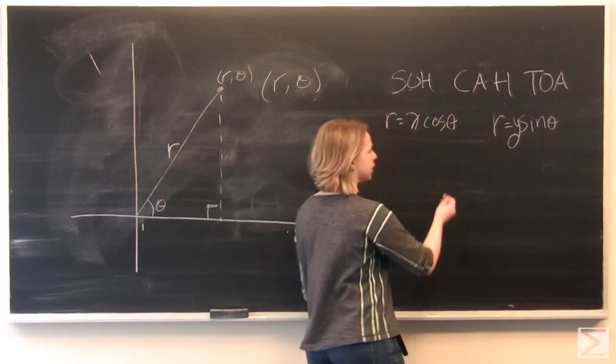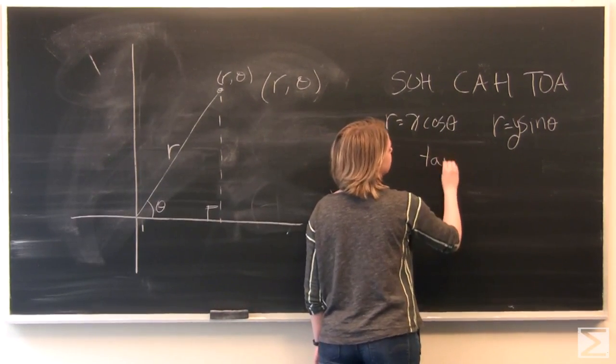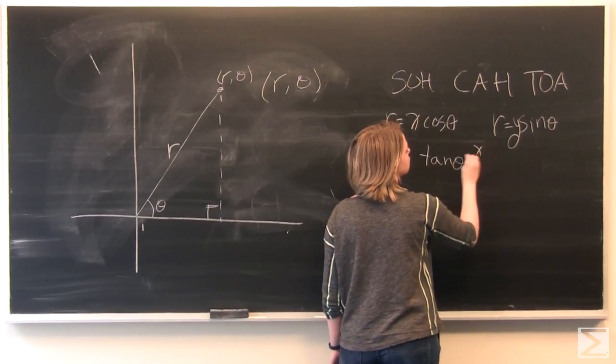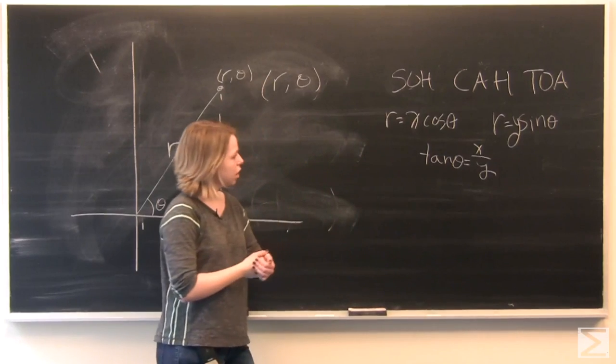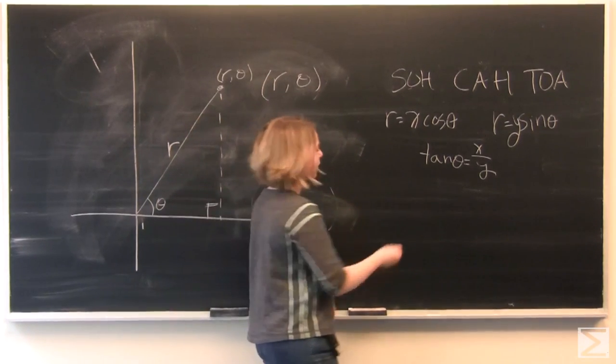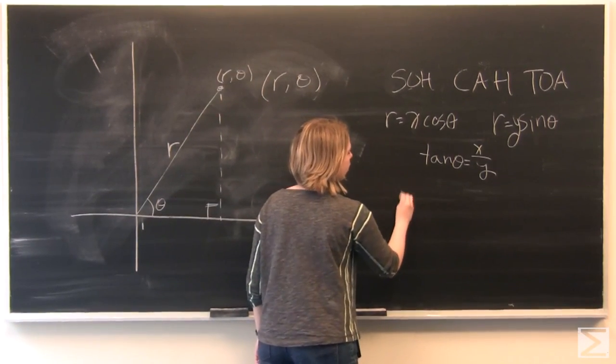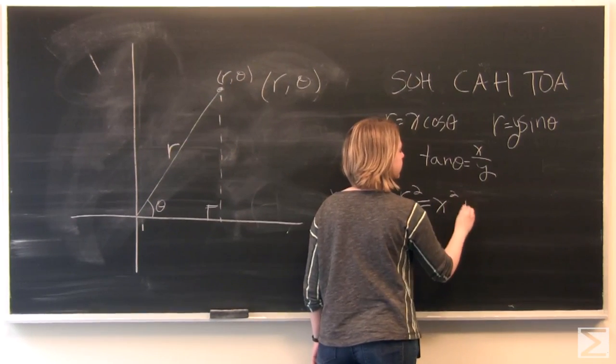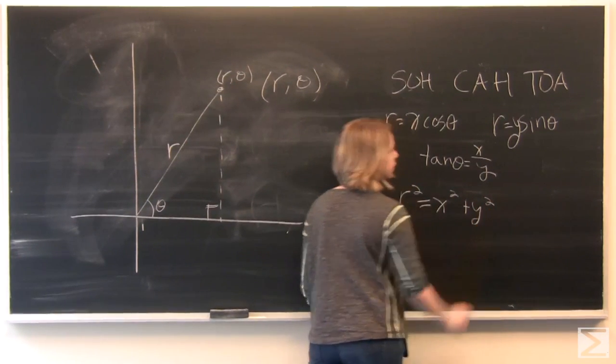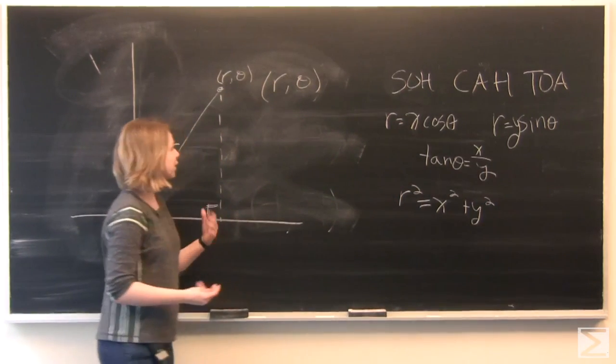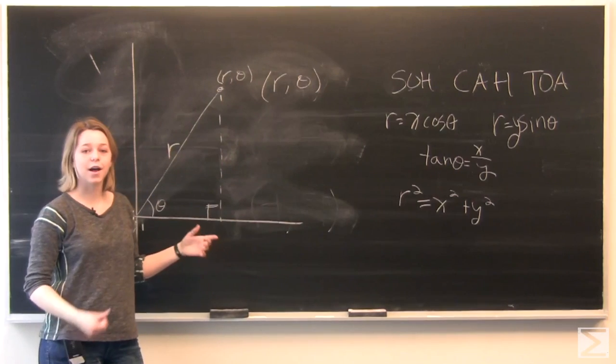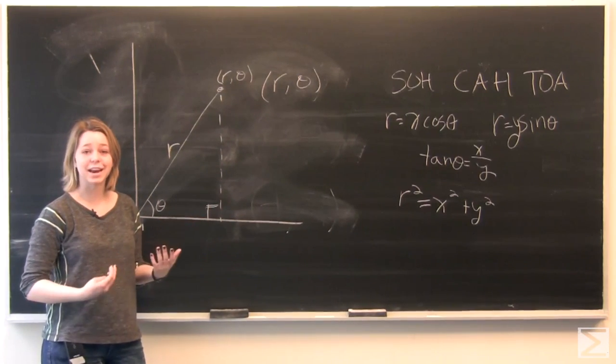And just in case you ever need it, tangent theta will be equal to x over y. And from the Pythagorean theorem, we know that our r squared is always going to be equal to x squared plus y squared. Using these equations, you can convert between your polar and Cartesian coordinates at any time.